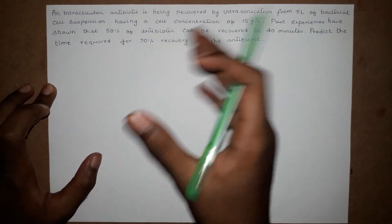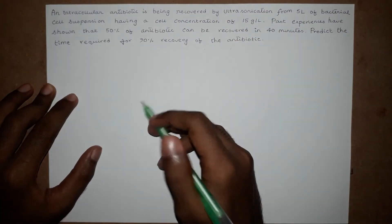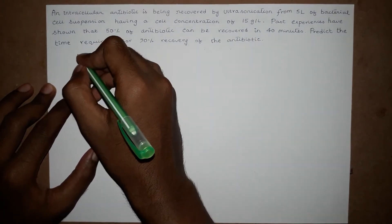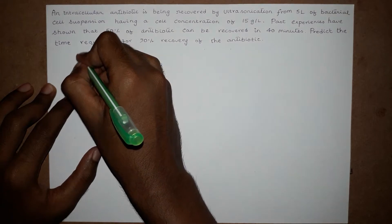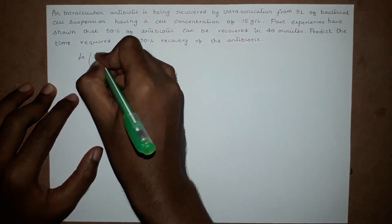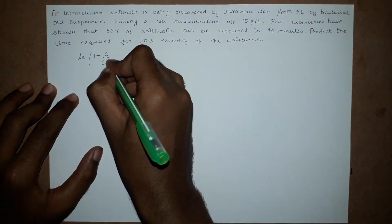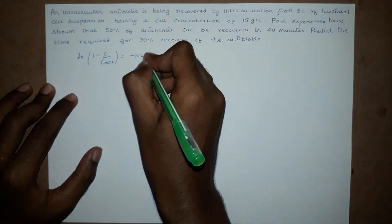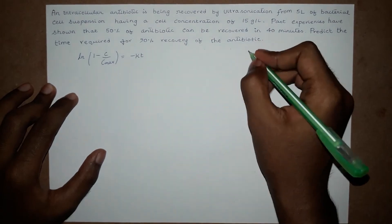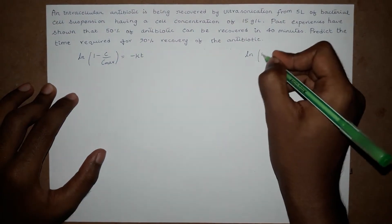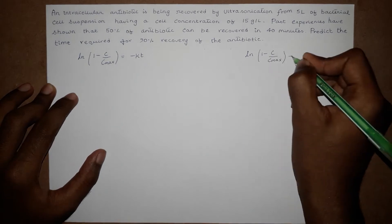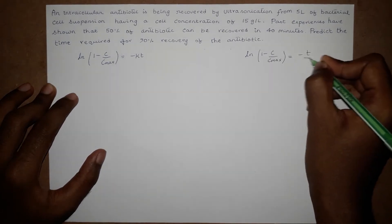Since it's a cell lysis problem, we lyse the cell and take out the intracellular antibiotic. The equation for cell lysis is given by ln of (1 minus C over C max) equals negative K T. The equation is of the form ln(1 - C/Cmax) = -T/theta.